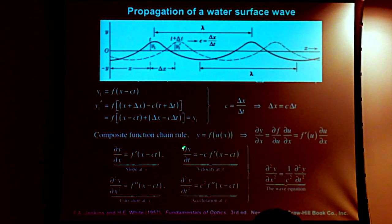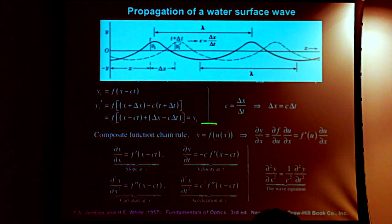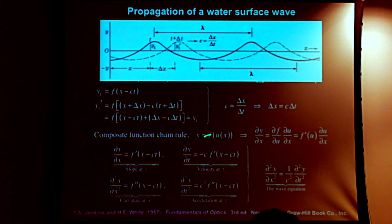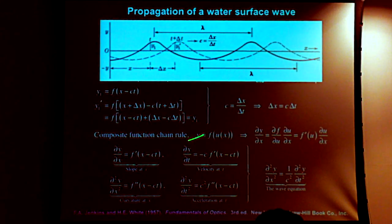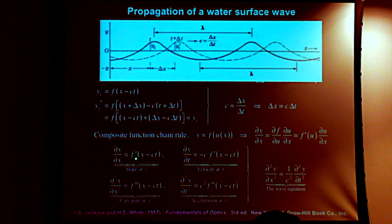If we have composite functions where u is some function of an independent variable, which then acts as the independent variable for function f, and if we want to differentiate such a function, we first differentiate y with respect to x. To get the derivative of y with respect to x, we first differentiate with respect to u — the derivative of f with respect to u — then multiply by the derivative of u with respect to x. In the case of these wave functions, the derivative with respect to x gives us f prime of x minus ct.